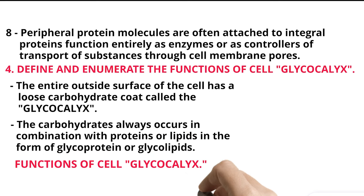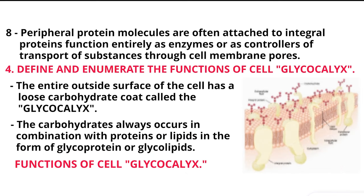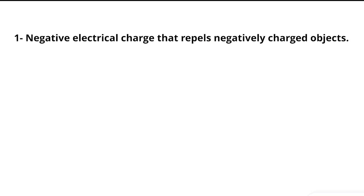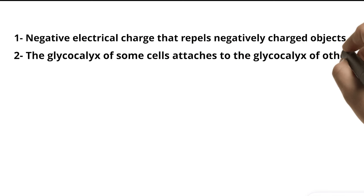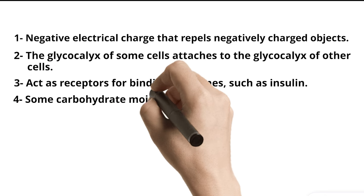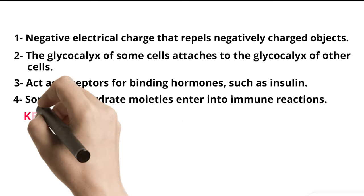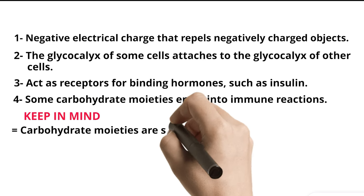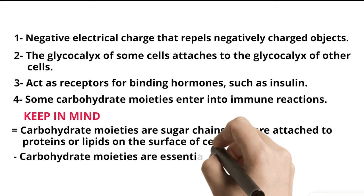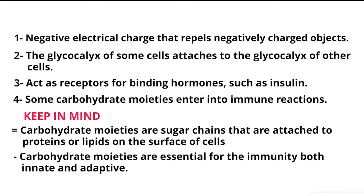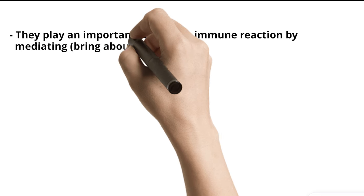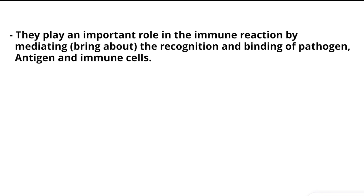Functions of cell glycocalyx: 1. Negative electrical charge that repels negatively charged objects. 2. The glycocalyx of some cells attaches to the glycocalyx of other cells. 3. Act as receptors for binding hormones such as insulin. 4. Some carbohydrate moieties enter into immune reactions. Keep in mind: Carbohydrate moieties are sugar chains that are attached to proteins or lipids on the surface of cells. Carbohydrate moieties are essential for the immunity both innate and adaptive. They play an important role in the immune reaction by mediating, bring about, the recognition and binding of pathogen, antigen, and immune cells.